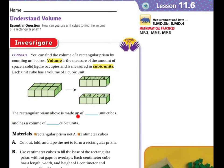The rectangular prism above is made up of eight unit cubes. One, two, three, four, five, six, seven, eight. They broke it apart right here. You can count it over here too.